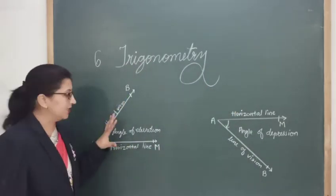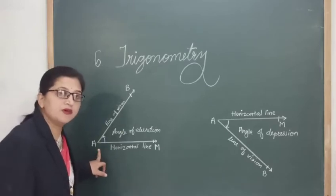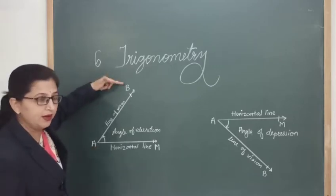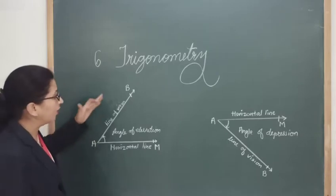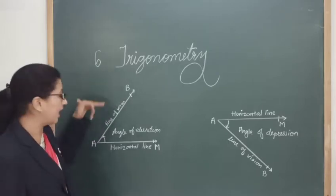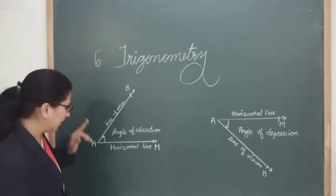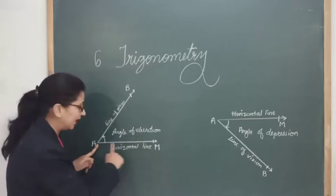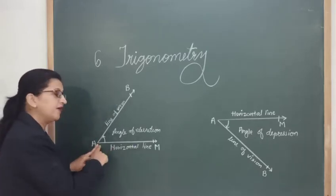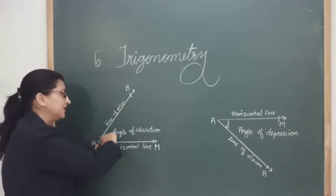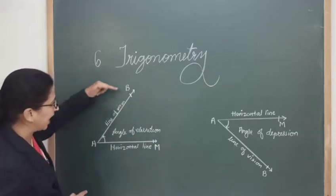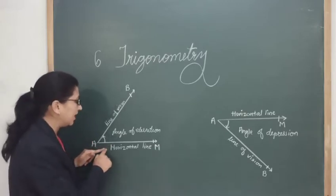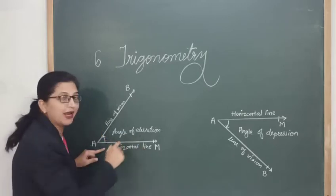Dear students, let's consider this. Here, if the observer is standing at point A and looking at point B — the observer is at point A and looking at an object which is at a height greater than the observer — then from the eyes of the observer, the straight line is the horizontal line. The line joining points A and B is called the line of vision.